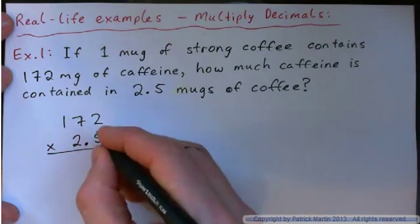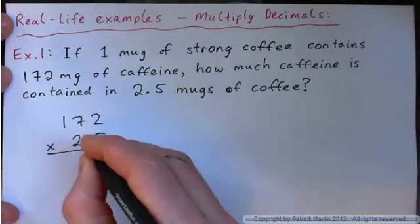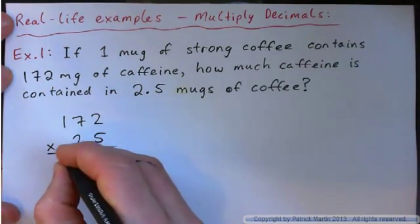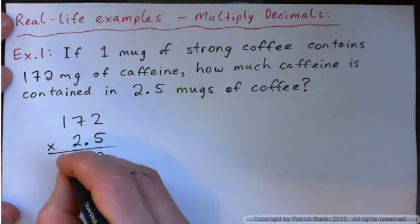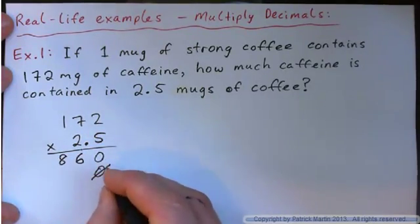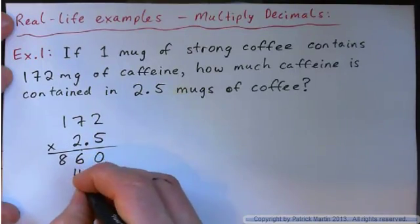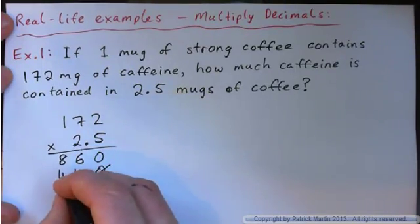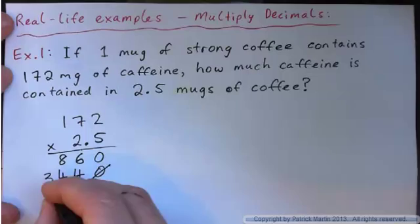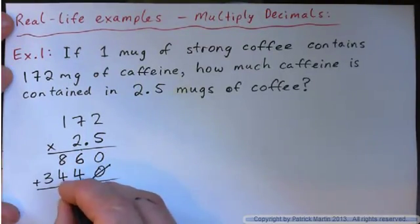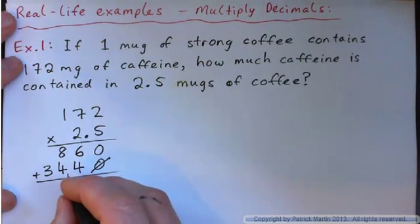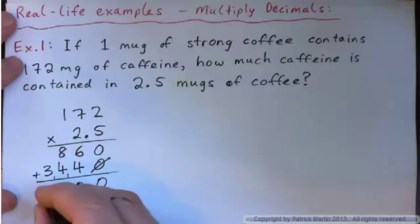Okay, so 5 times 2 is 10. Carry the 1. 5 times 7, 35 and 1 is 36. And carry 3. 5 of 1 is 5 and 3 is 8. Put down a placeholder 0. 2 times 2 is 4. 2 times 7 is 14. Carry 1. 2 times 1 is 2 and 1 is 3. Add, 0, 10, carry the 1, 13, carry 1 and 4.